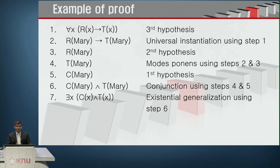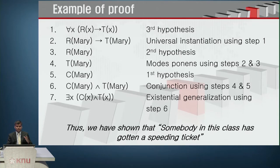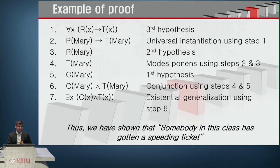Using existential generalization, you can say there exists a student in the class such that C of x and T of x — she is in the class and got a speeding ticket. Thus, we have shown that somebody in this class has gotten a speeding ticket. We used universal instantiation, modus ponens, conjunction, and existential generalization to make this conclusion.